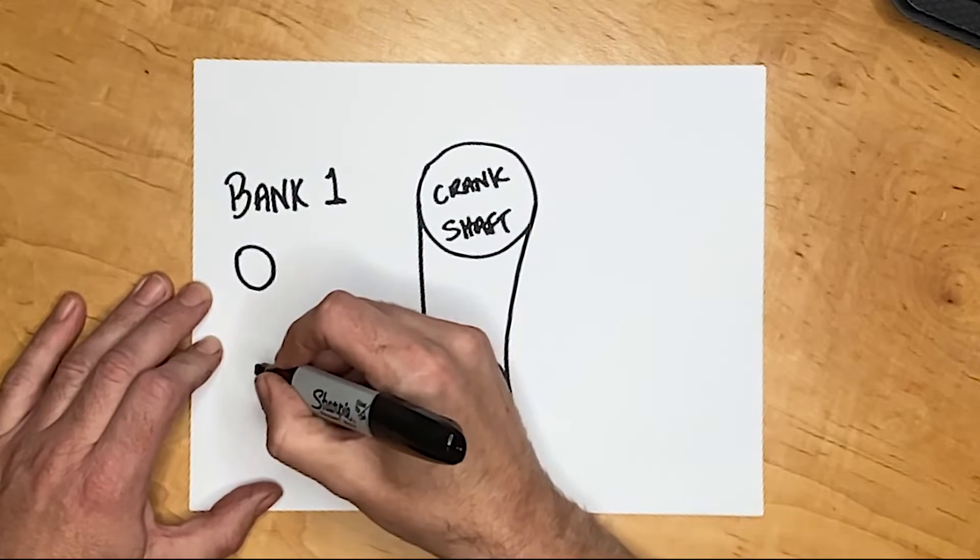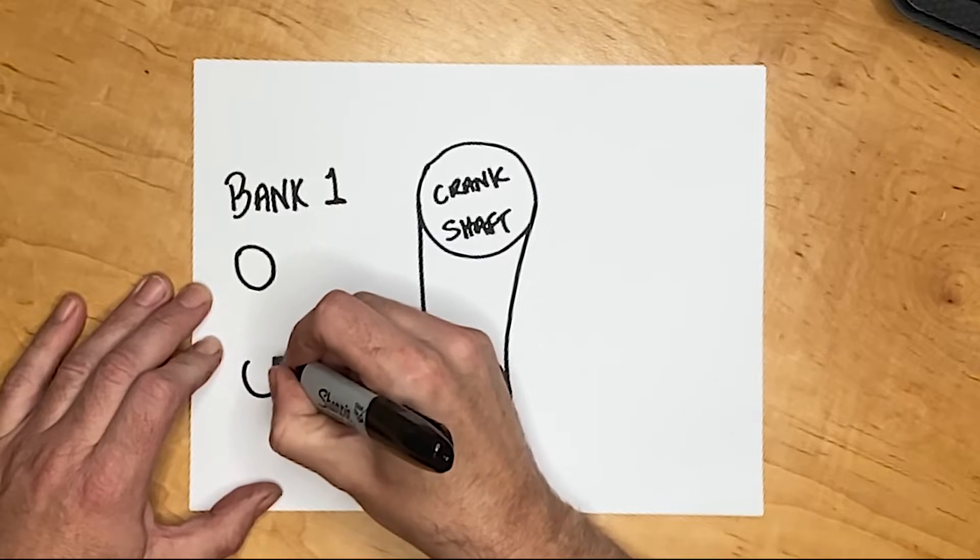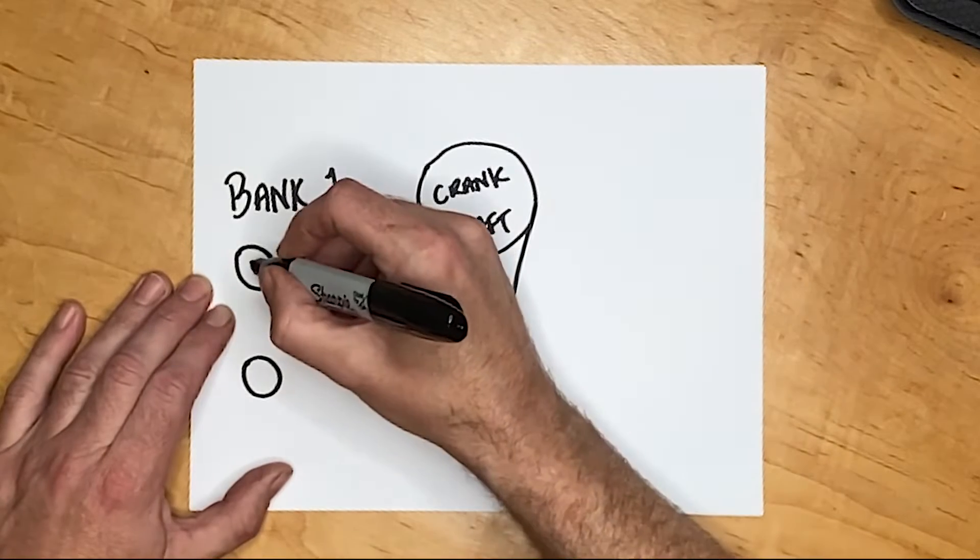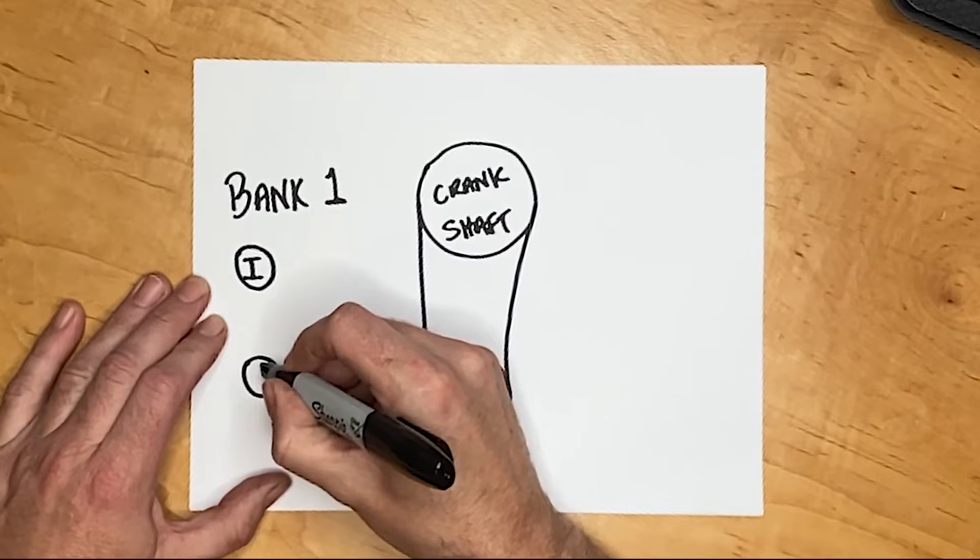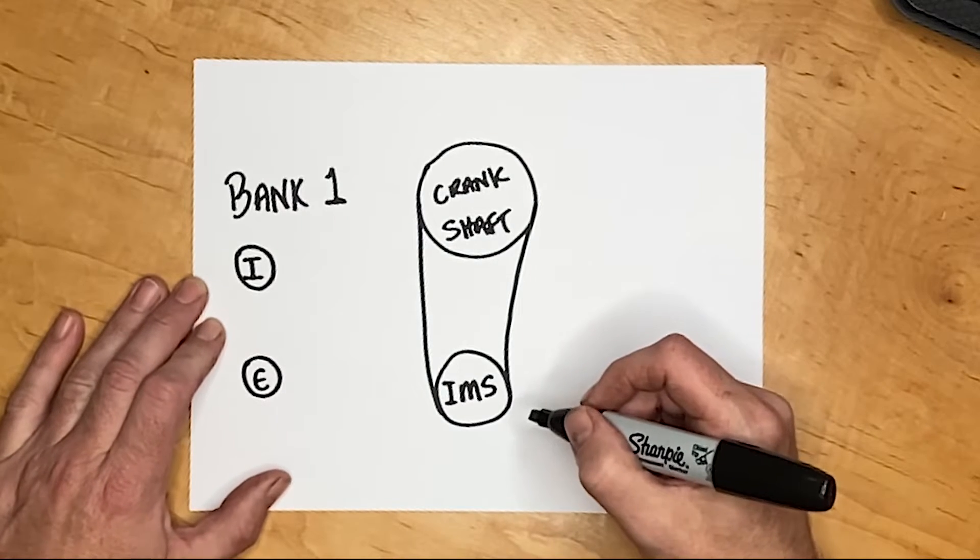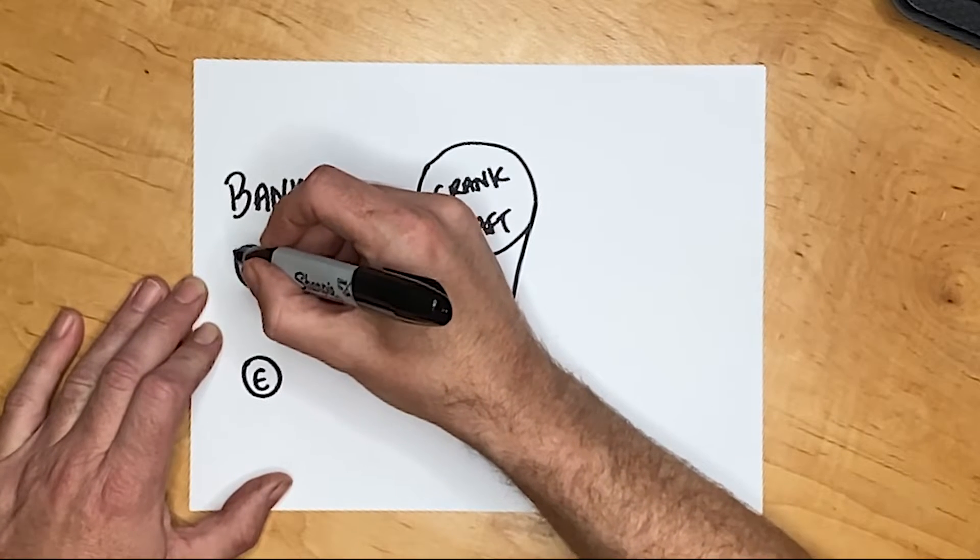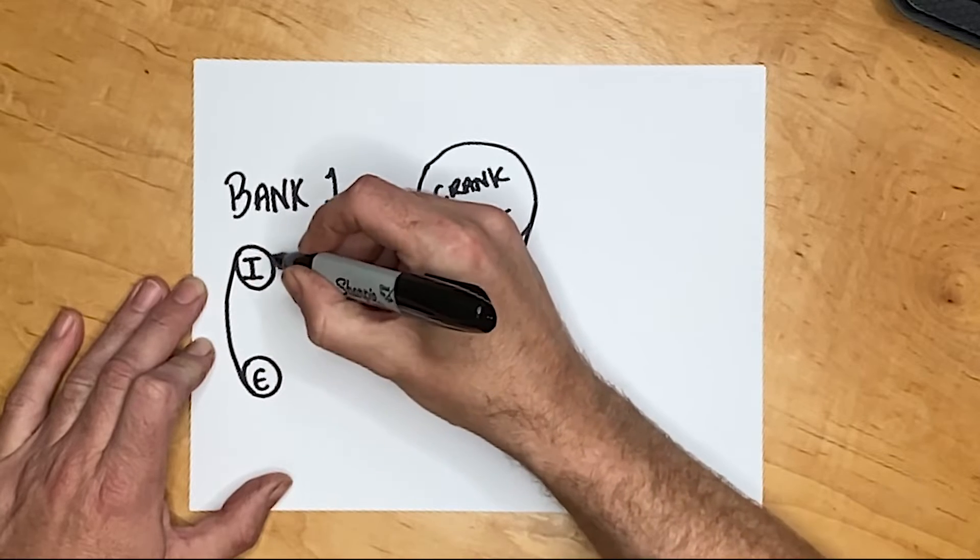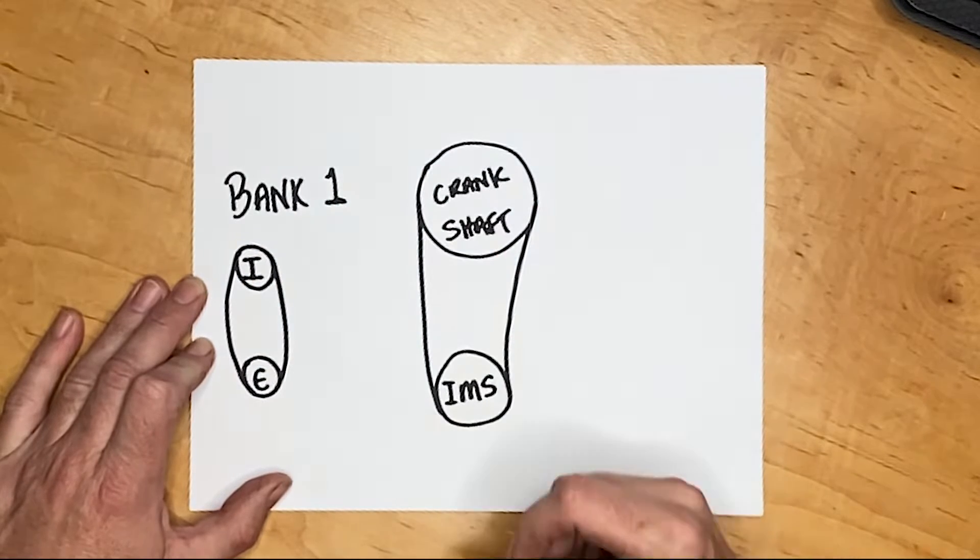On bank one, at the top we have the intake cam because the intake where all the air comes in is on the top. Underneath we have the exhaust cam. The exhaust is connected underneath. And they are connected to each other by their own chain and timed to each other with that chain.